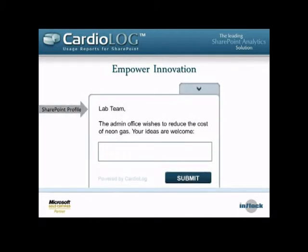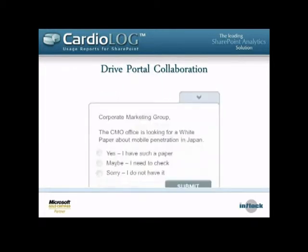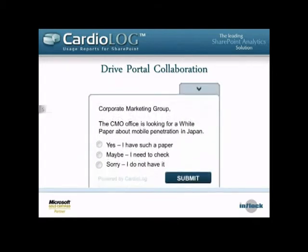We can segment a specific survey by a SharePoint profile — connecting to AD groups, user attributes — and show different profiles different surveys. We can also segment surveys by anonymous data. If you're using CardiLog or the Voice of Customer tool for a public-facing website, we can survey different users based on their traffic sources, their search terms, what they've done previously on the site, or how much time they're spending on a specific page.